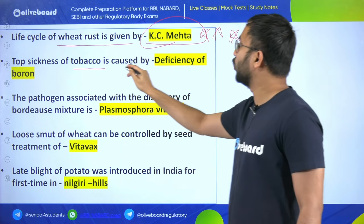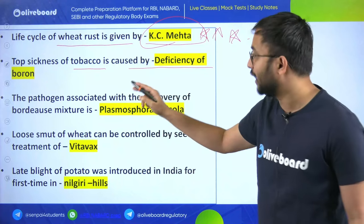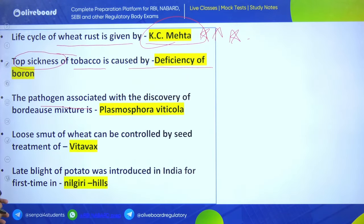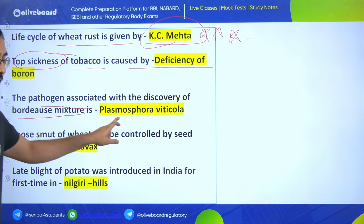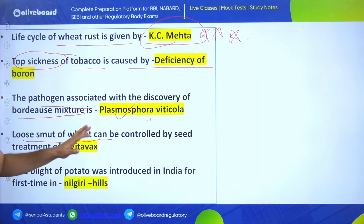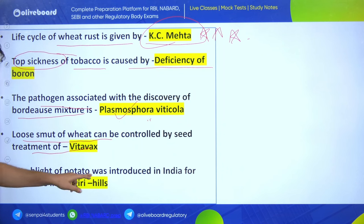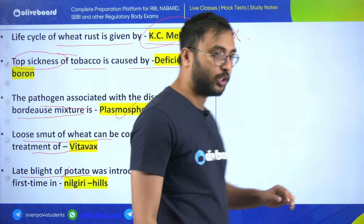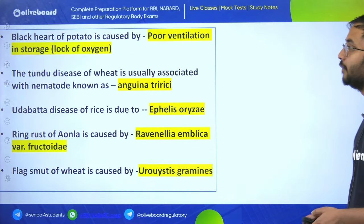Life cycle of wheat rust was given by K.C. Mehta - a three-star question. Top sickness of tobacco is caused by deficiency of boron - very important disease. The pathogen associated with discovery of Bordeaux mixture is Plasmopara viticola - this is an AFO previous year question. Loose smut of wheat can be controlled by seed treatment of Vitavax.